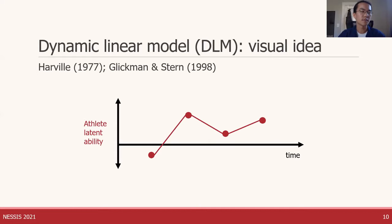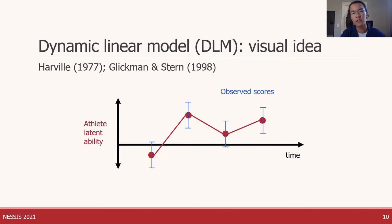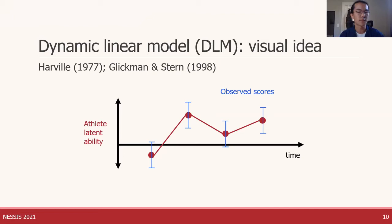The goal is to learn athletes' latent abilities over time. The red dots on this chart represent a single athlete's latent ability, and we see it changes over time — maybe due to training or injuries. Unfortunately, we can't directly observe an athlete's latent ability; instead, we can only observe their performances as represented by their scores in athletic events. We generally expect an athlete's scores at each time point to be close to their latent ability at the time, but scores are allowed to vary depending on how well they perform in each event. Dynamic linear models formalize this intuition where observed outcomes are noisy realizations of latent parameters that evolve over time.